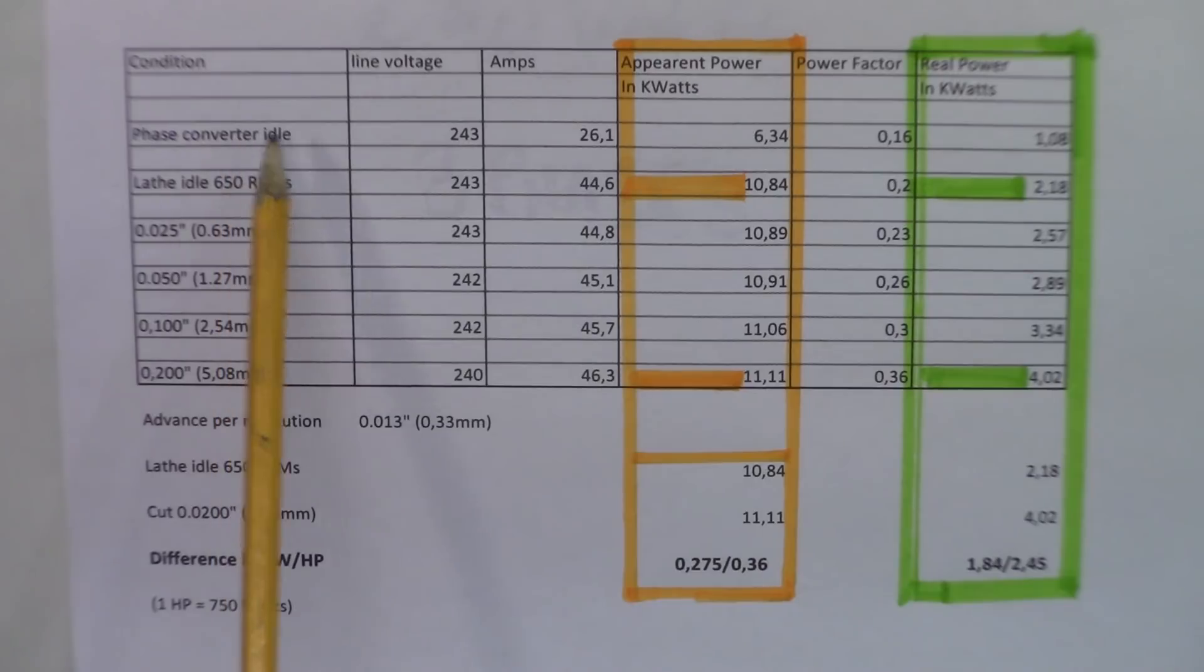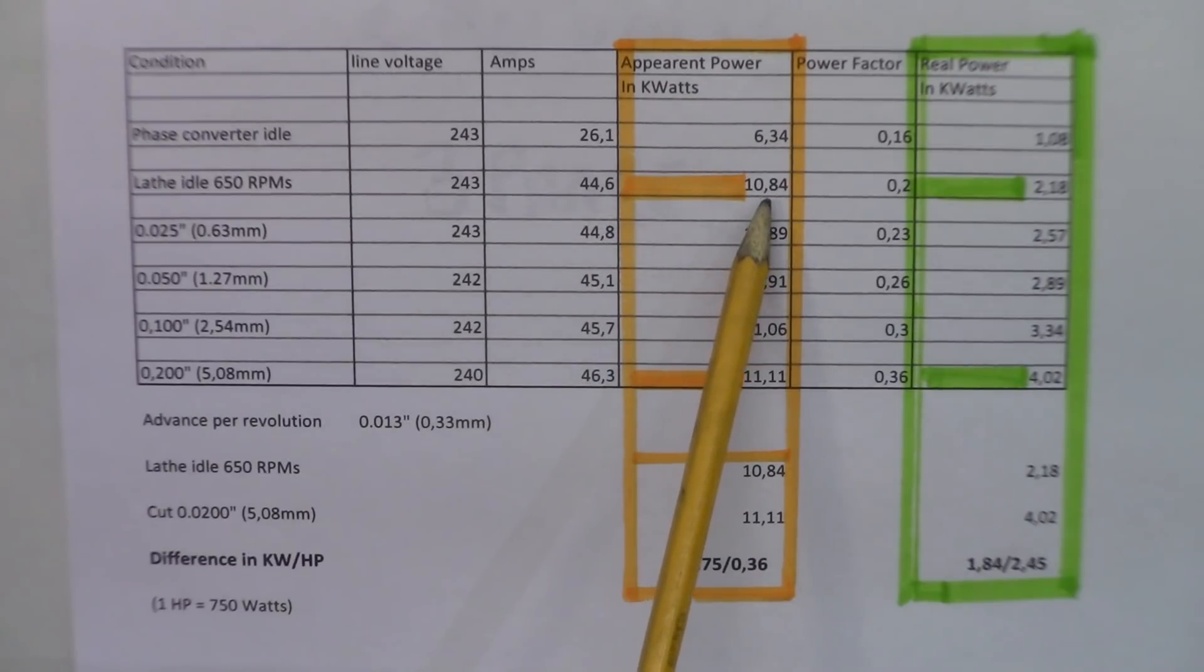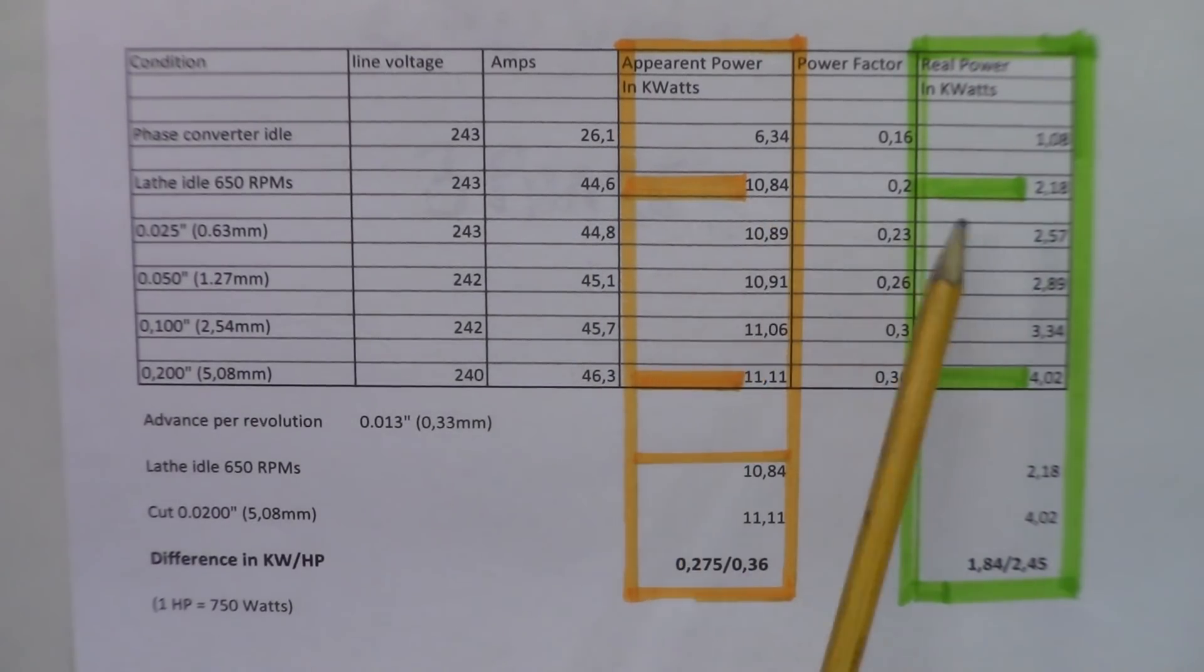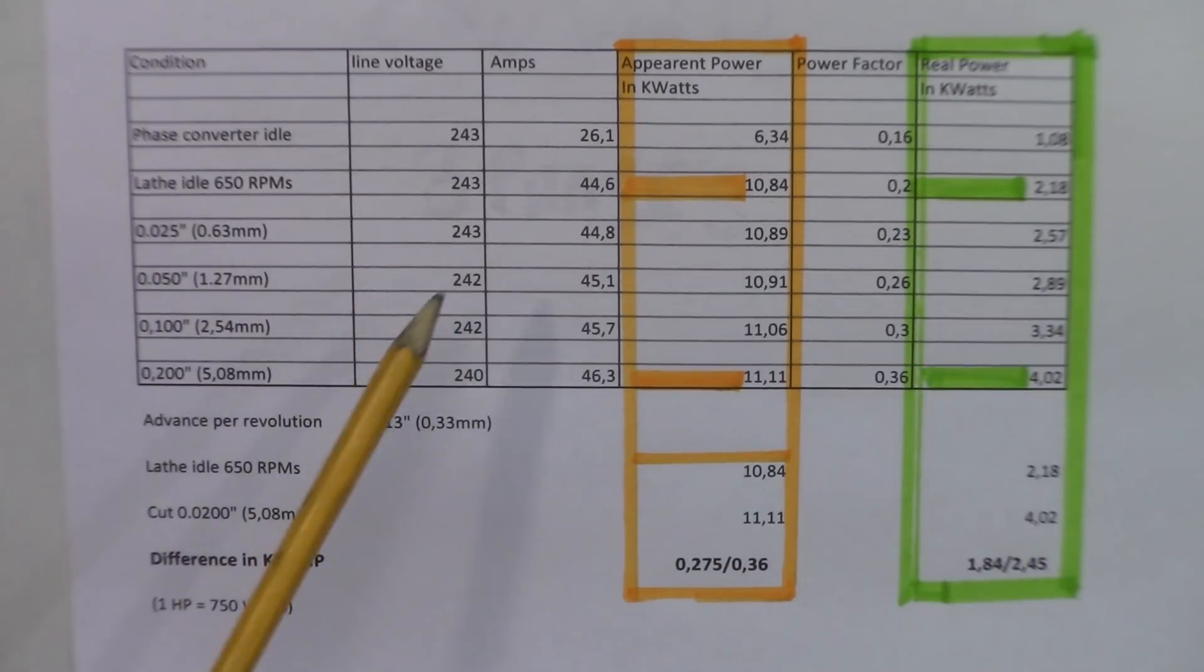This is not exactly relevant to today's testing, but we'll be just putting the lathe under power. The motor is idling 650 RPMs, so the figures will change here quite drastically. We're getting like 10 kilowatts of consumption, but you bring back the power factor to a more realistic figure, and it's going to give you 2.18 kilowatts, which is a big difference. So the different cuts here, which I compiled, let's say 10 kilowatts, 10.89, up to 11.1 kilowatt here, and the real power will be like 2.18 to 4.02 after just being corrected with the power factor.